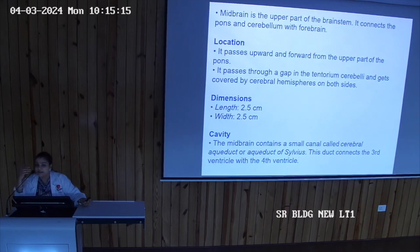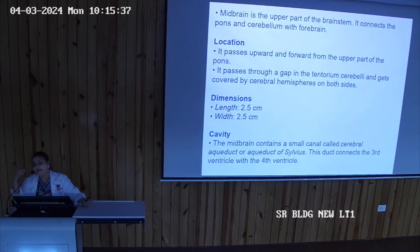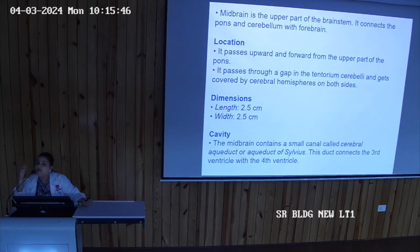The cerebral aqueduct of Silvius connects to the fourth ventricle, which is the combined cavity of the hindbrain. In total, we have four ventricles and one aqueduct. The aqueduct connects the third ventricle to the fourth ventricle through the midbrain canal — that is the cerebral aqueduct of Silvius.